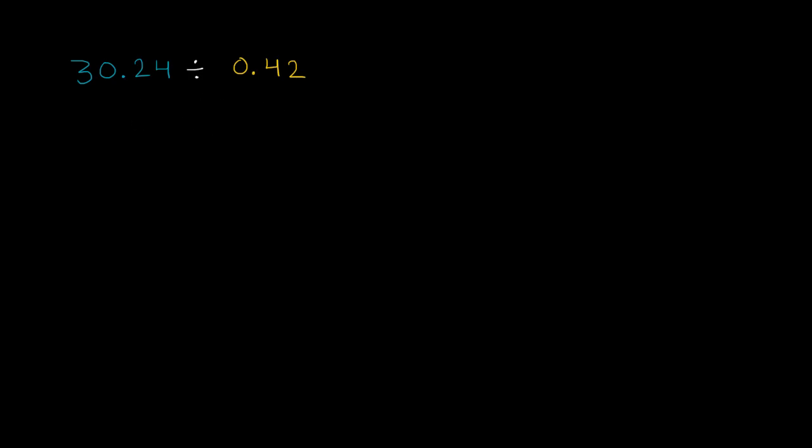So there's a couple of ways you could think about it. We could just write it as 30.24 divided by 0.42. But what do you do now? Well, the important realization is when you're doing a division problem like this, you will get the same answer as long as you multiply or divide both numbers by the same thing.